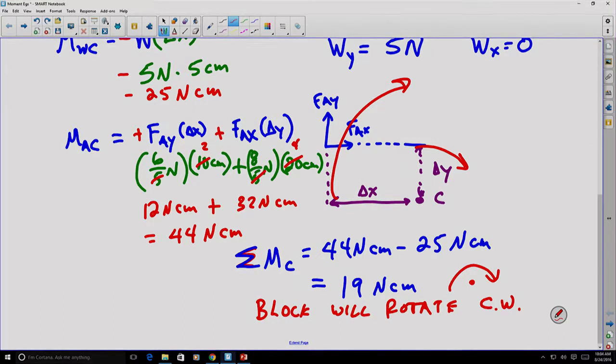If the block had a greater weight, let's say, for example, the block, instead of having a weight of 5 Newtons, had a weight of 10 Newtons, then this value here would have been twice as much, or negative 50 Newton centimeters. And notice 44 minus 50 would be negative 6. That means that the block would want to rotate in a counterclockwise direction, or it would push itself back down on the table, and then there would be additional normal forces holding it up.